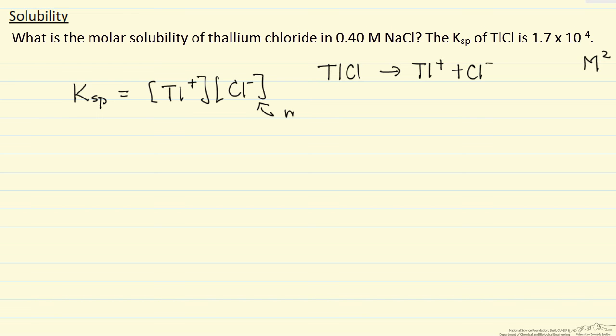So what is different in this problem from just dissolving the salt by itself is we have sodium chloride in solution. This common ion effect means we have chloride ion, which in this equilibrium will push the equilibrium to the left, meaning we will be able to dissolve less of the thallium chloride than we would if sodium chloride was not present.